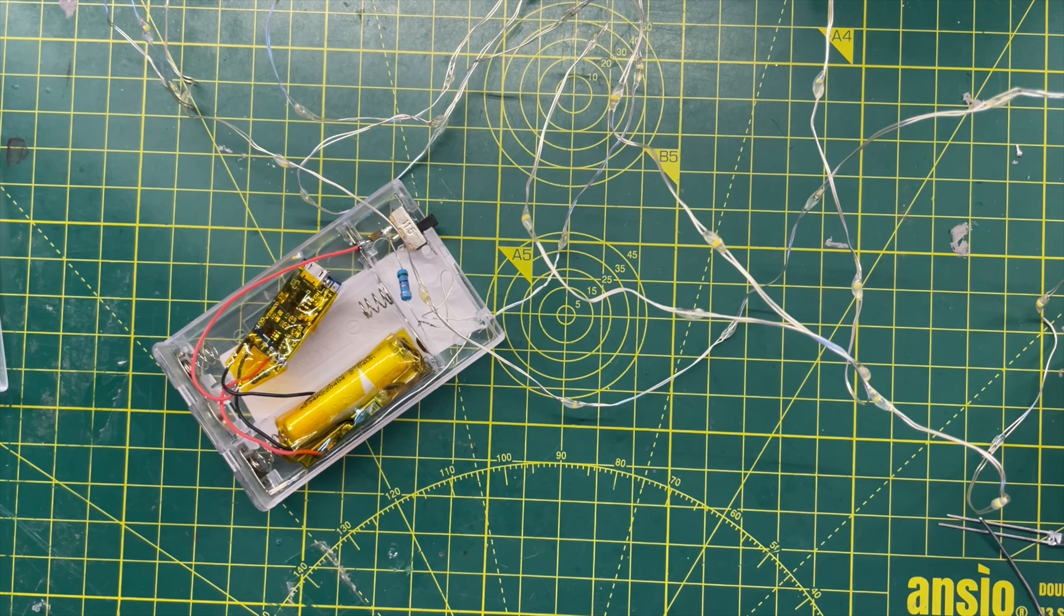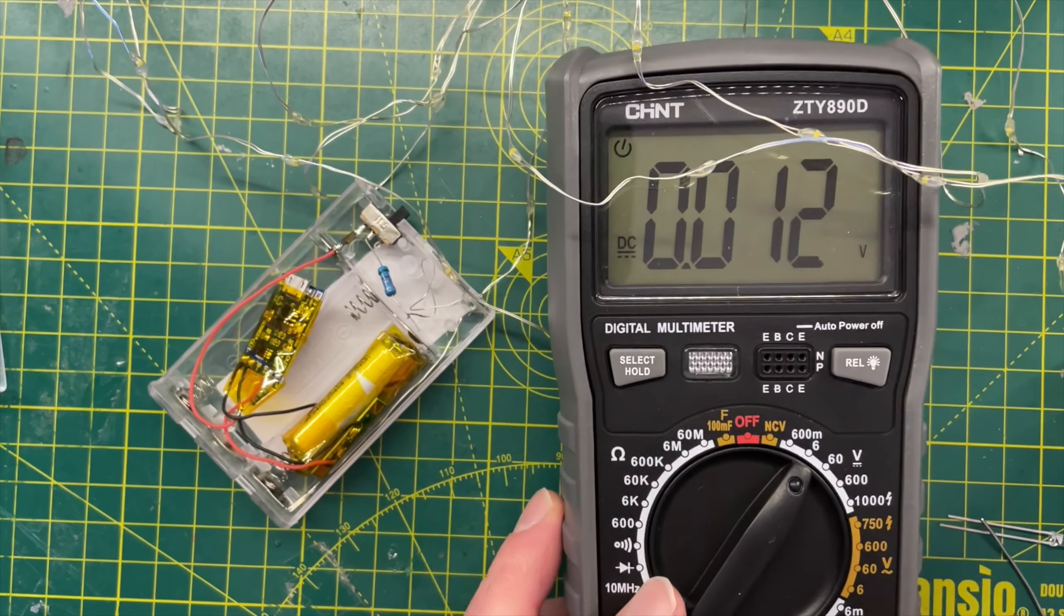I charged up the battery and ran the lights for a couple of hours with no problems. But the next evening when I tried to turn them on again, nothing happened.